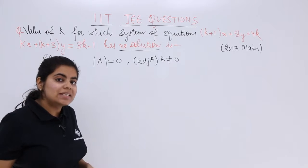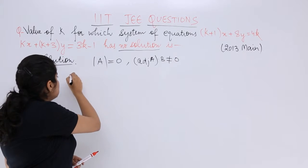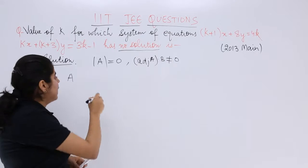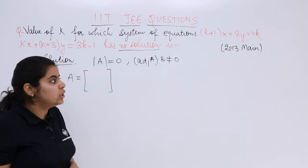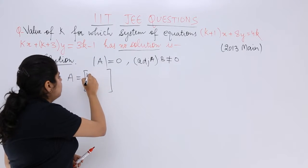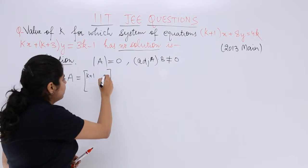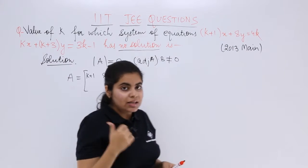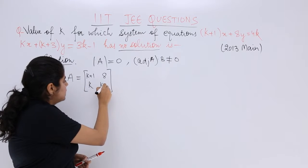What is A? A is nothing but a matrix called the coefficient matrix, which contains the coefficients. What are the coefficients? For x, the coefficient in equation 1 is k+1, here it is 8. Next we have k and k+3. So let me write k and k+3.